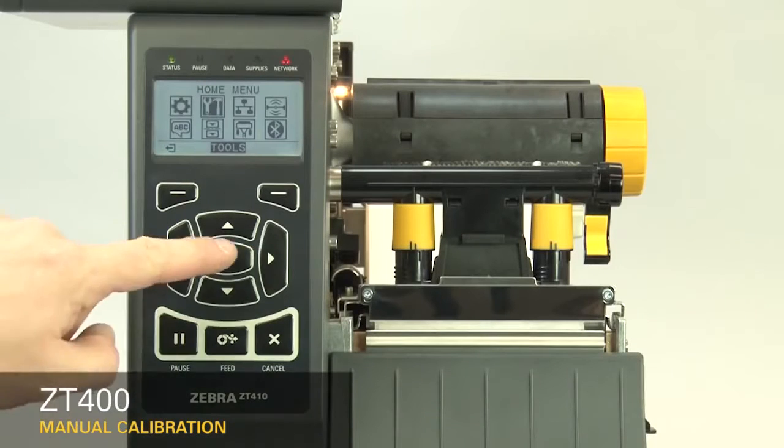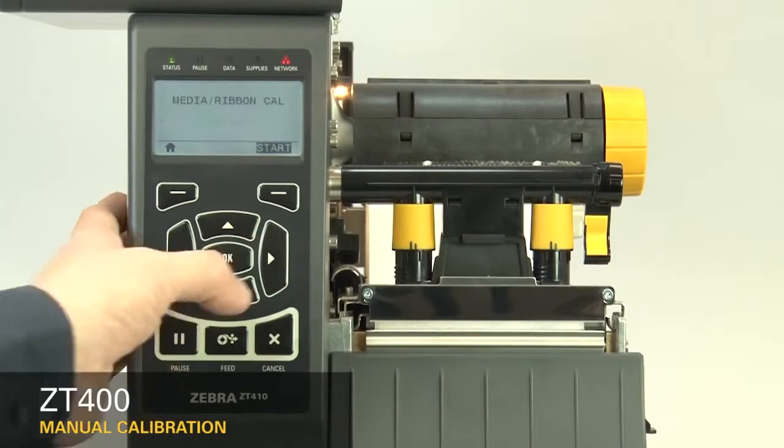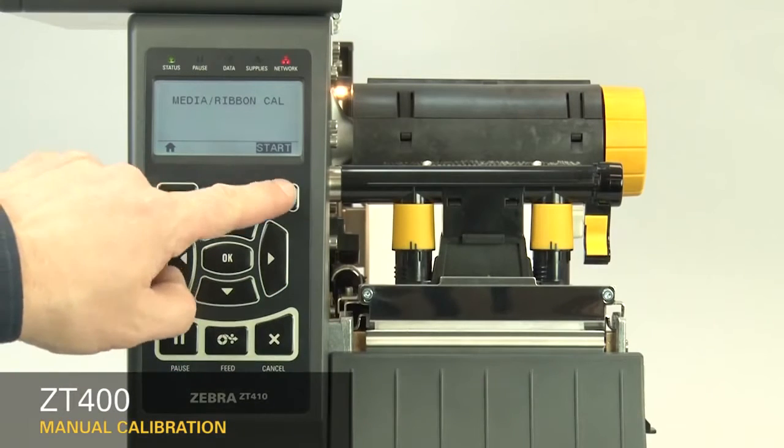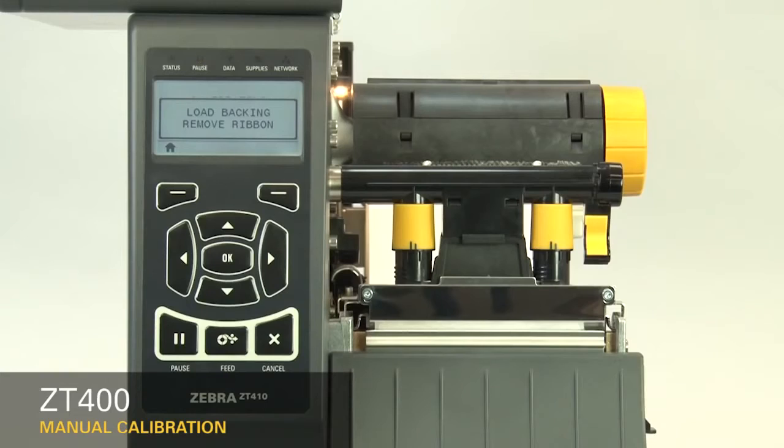After you have the sensor properly located, select Media Ribbon Calibration in the menu. Press the right select button under the display to start. Be careful not to press the button more than once.